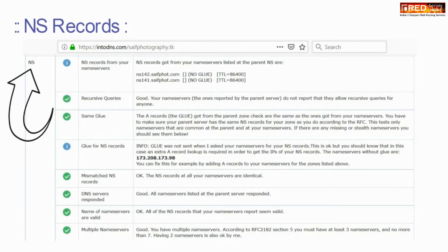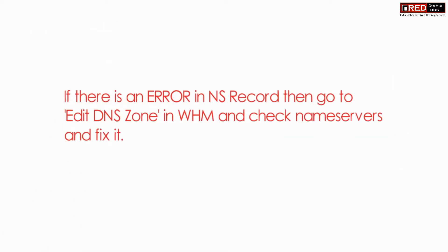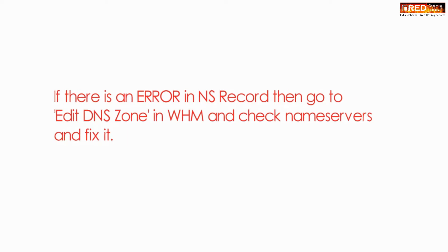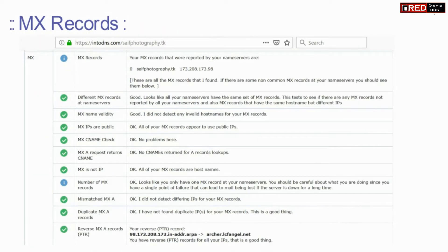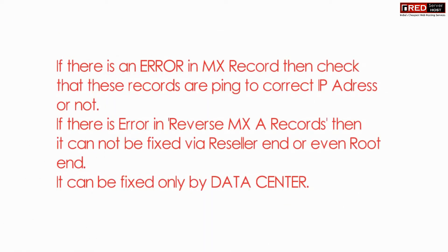Under NS records, if there is an error you must fix it via Edit DNS Zone in WHM. For MX records, you can check this section, which is required for the functioning of email. You can also request data centers to update our DNS.